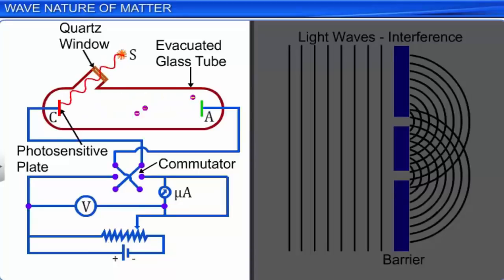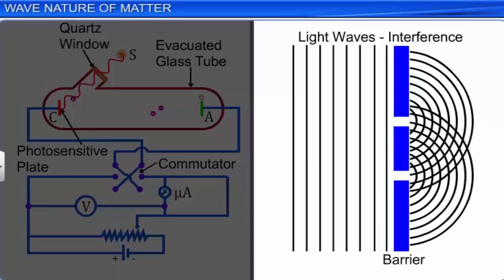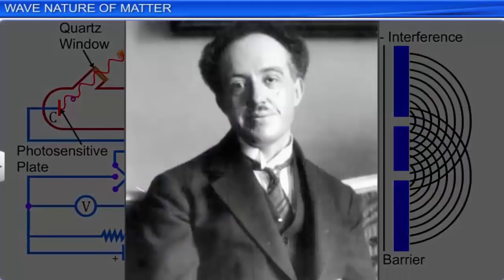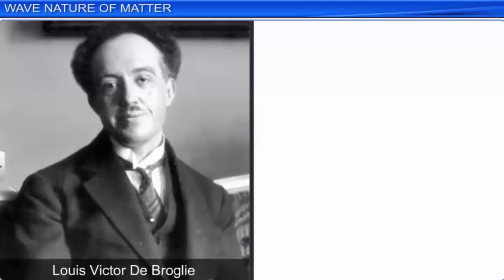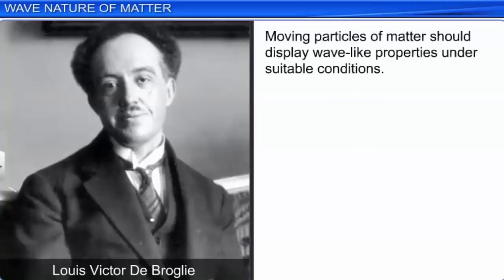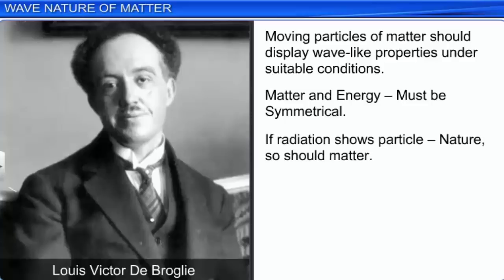The experiment conducted to study the photoelectric effect led us to conclude that radiation behaves as if it were a bunch of particles. While experiments conducted to study the phenomena of interference showed the wave nature of radiation. This particle-wave nature of radiation was extended to matter by Louis Victor de Broglie. De Broglie hypothesized that moving particles of matter display wave-like properties under suitable conditions. He reasoned that nature was symmetrical, and that the two basic physical entities — matter and energy — must have symmetrical character. Hence, if radiation showed particle nature, so should matter.